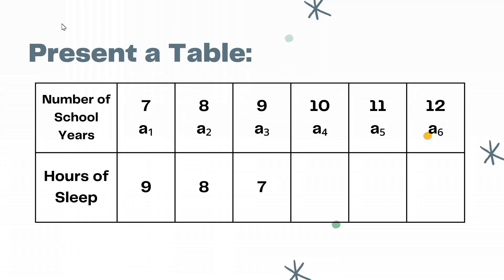Let's now present the table, because this will help us identify the data. In the table, we can see the number of school years, wherein the first year is 1 (or grade 7) and the last year is 6 (or grade 12). At this point, the next three terms of Kim's sleep hours are missing.